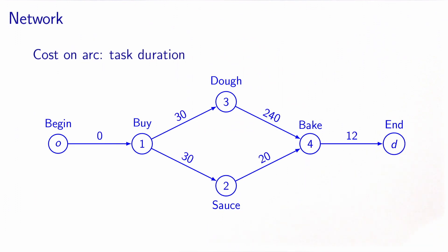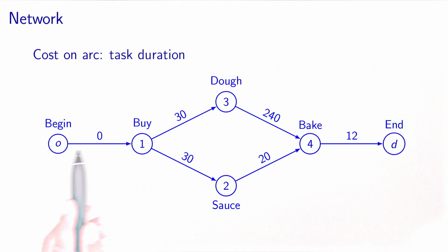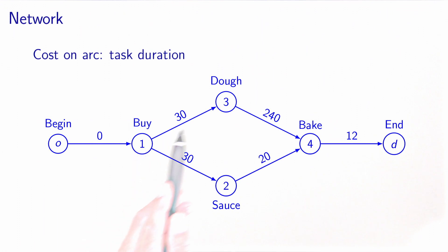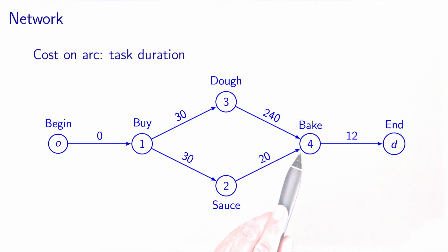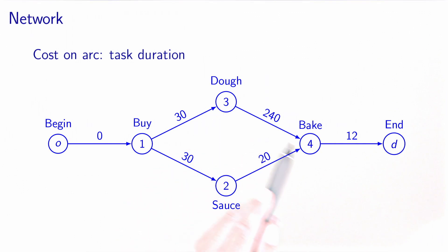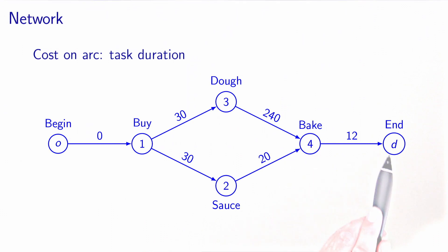Now we need to add a cost on each arc. The idea is to assign each arc the duration of the task represented by its upstream node. The origin node is not a real task, so its duration is zero. Buying the ingredients takes 30 minutes, so we put 30 on each arc leaving that node. Preparing the sauce takes 20 minutes, so we put 20 on its arc. Preparing the dough takes 4 hours, so we put 240 on its arc. And baking the pizza takes 12 minutes, so we put 12 on its arc.